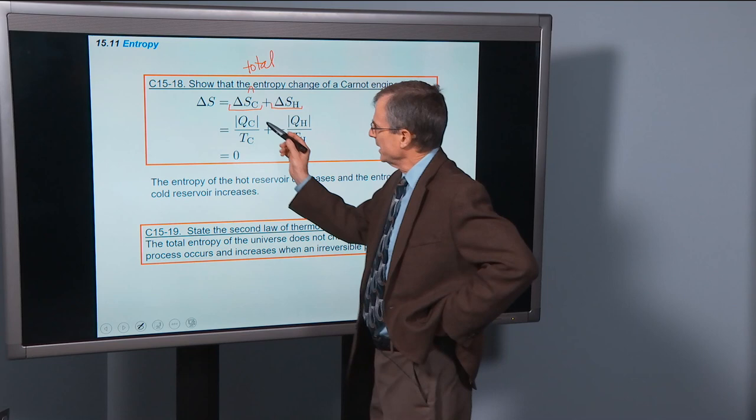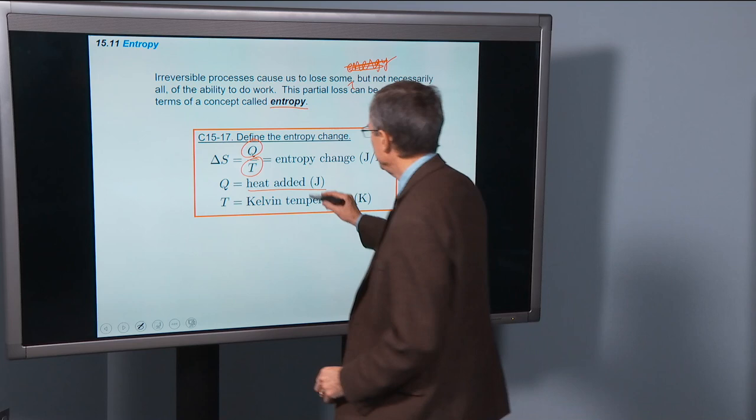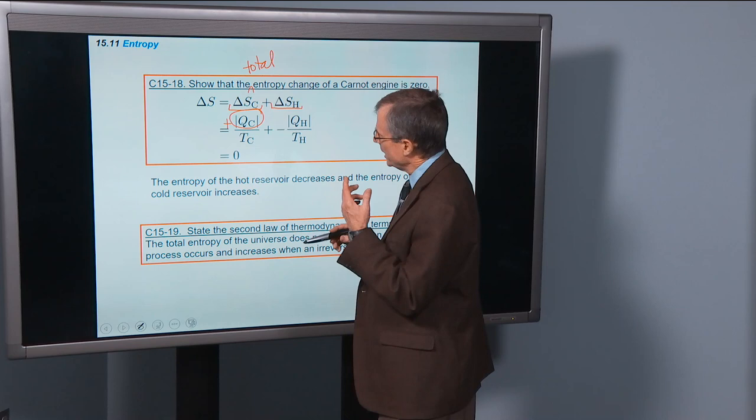Well, the cold reservoir has an amount of heat added to it. So this comes in as a positive number because we're adding heat. Remember that this is the heat added. So that's the heat added divided by the temperature of the cold reservoir.